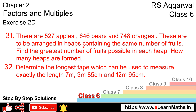These are to be arranged in a heap — a heap containing the same number of fruits. Find the greatest number of fruits possible in each heap. We also have to find how many heaps are formed.